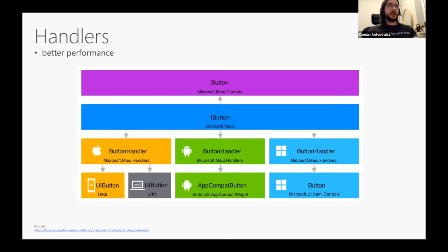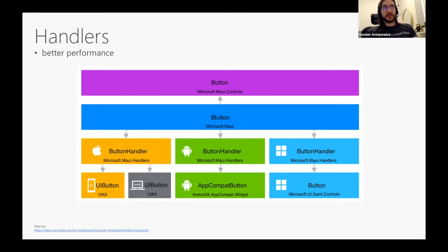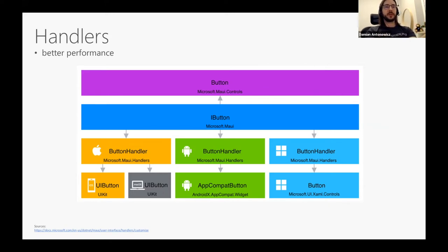What's also new in .NET MAUI is the new handler architecture. Let's first refresh how you access platform-specific code in Xamarin Forms: if you want to change a UI component using platform-specific code, you use custom renderers. But there are no custom renderers in .NET MAUI — you use handlers instead. The reason is that handlers have better performance. In a Xamarin Forms application, when starting, the app does assembly scanning to find any custom renderers in the assembly.